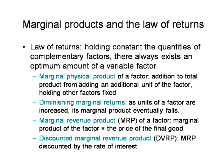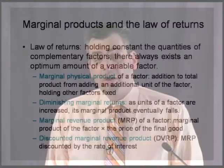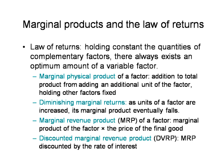The marginal physical product — or just marginal product — of a factor of production is the addition to total output from employing one more unit of that factor, holding other factors fixed. If we add one more hamburger worker, how many more hamburgers do we get — three hamburgers, five hamburgers per unit of time? That's the marginal physical product of the additional unit of labor. The principle of diminishing marginal returns tells us that as we add additional units of a factor, its marginal physical product — the amount of additional output holding the other factors fixed — eventually begins to decline.